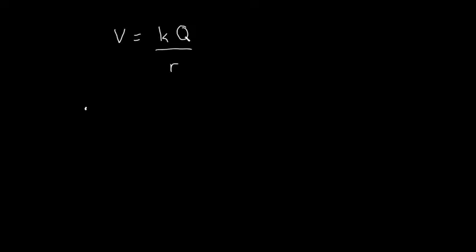The electric potential from a point charge depends on K, Q the size of the charge, and R how far you are away. If I have a big charge Q here, it's creating some electrical potential at a nearby point, related to that distance r. If I move farther away, the electric potential is going to be slightly less, because you're at a higher distance and your potential decreases.